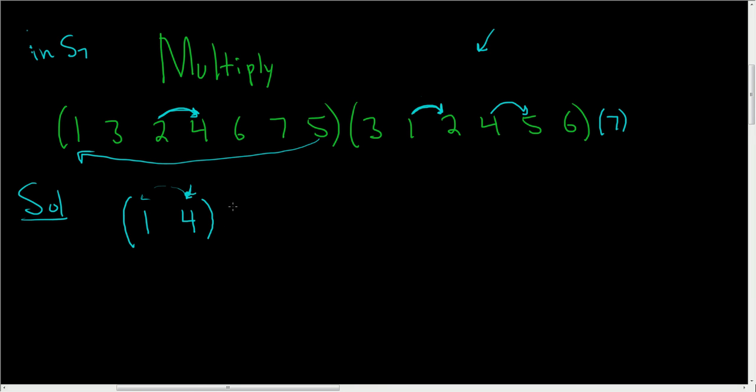Okay, let's pick another number now. How about 2, so parentheses 2. 2 goes to 4, but then 4 goes to 6. So 2 goes to 6, and now we go to 6. 6 goes to 3, but then 3 goes to 2. So 6 goes to 2. Oh, look at that. We close it.